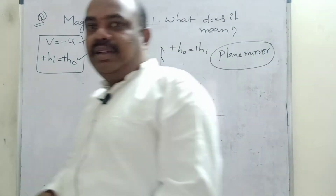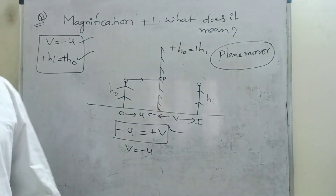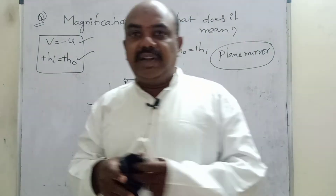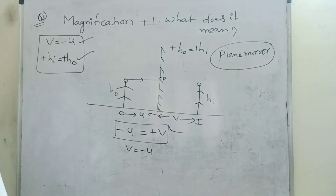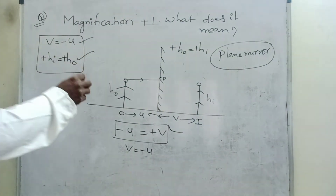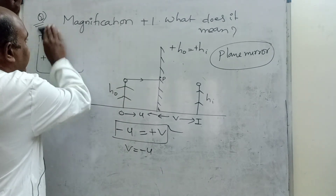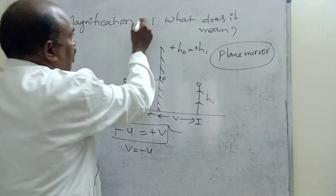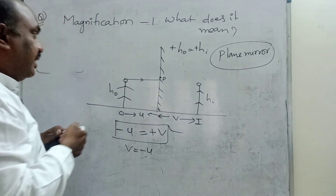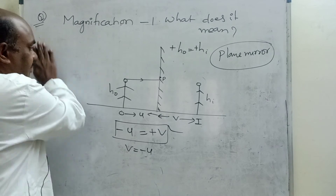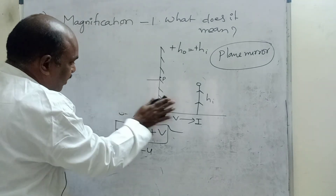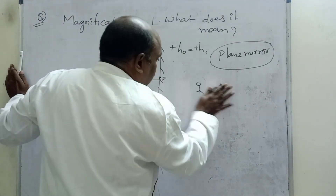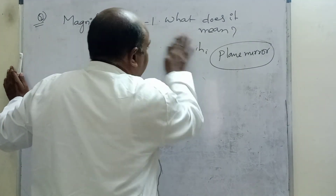Understand, children? This is a very important question. If magnification is plus 1, you have to solve like this — the answer is plane mirror. Now, for magnification equal to minus 1, try and write in the comment section: what does it mean, and which mirror is it? Magnification plus 1 means plane mirror. Magnification minus 1 — try to determine whether it is a plane mirror, concave mirror, or convex mirror, and write in the comment section.